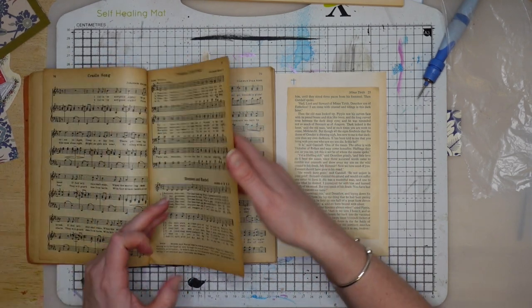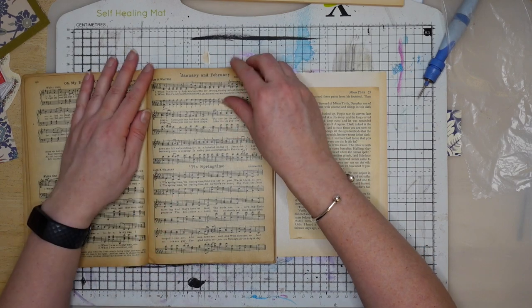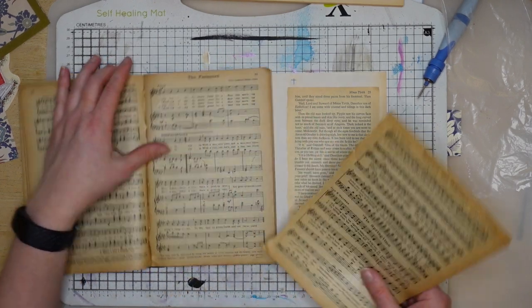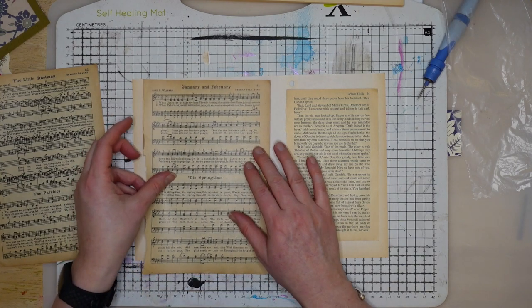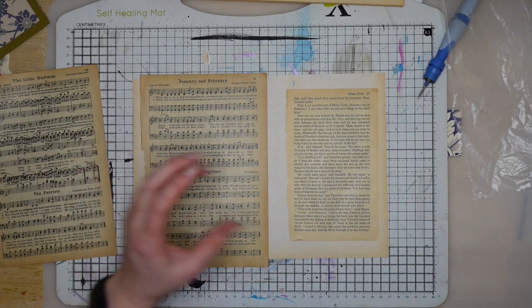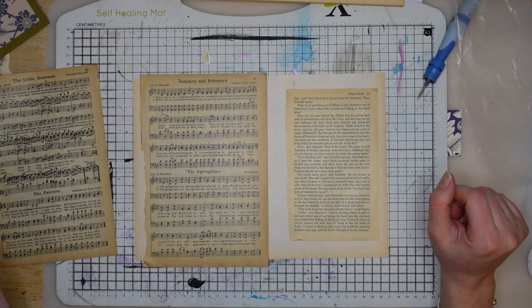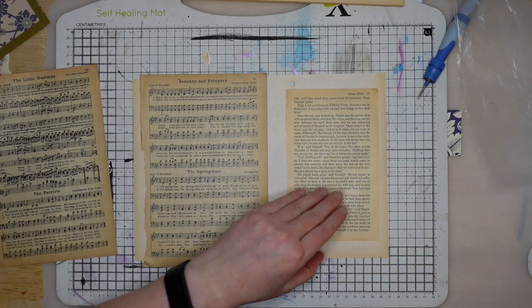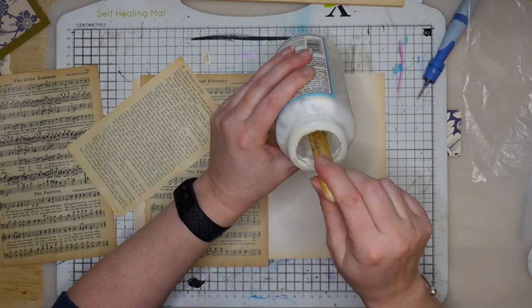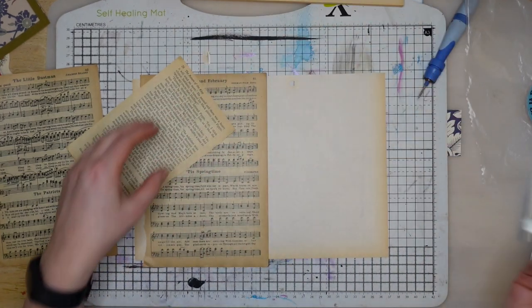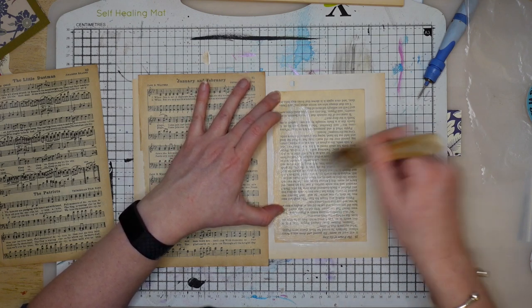So I've got some music paper here and it doesn't really matter what it says because it's going to be covered up in the background. To cover this I'm going to use my Mod Podge. I'm using wet glue because I quite like the crunchy effect that it gives, but you could always use a glue stick. I did want to have this be extra firm and safe. Let's just paint it onto the back and we'll turn it over and splodge it down.